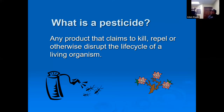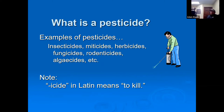So what is a pesticide? It's any product that claims to kill, repel, or otherwise disrupt the life cycle of a living organism. Examples include insecticides, miticides, herbicides, fungicides, rodenticides, and algicides. The suffix '-cide' comes from Latin meaning 'to kill' — so these products kill insects, mites, herbs (weeds), fungus, rodents, and algae.